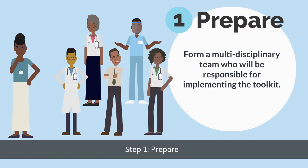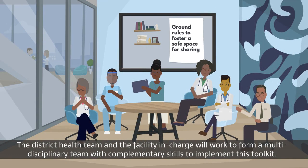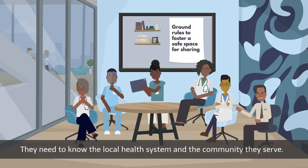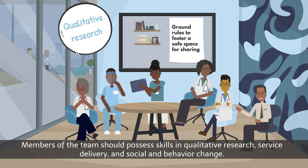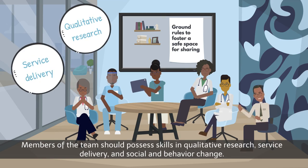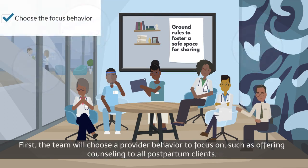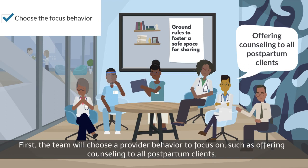The district health team and the facility in charge will work to form a multidisciplinary team with complementary skills to implement this toolkit. They need to know the local health system and the community they serve. Members of the team should possess skills in qualitative research, service delivery, and social and behaviour change. First, the team will choose a provider behaviour to focus on, such as offering counselling to all postpartum clients.